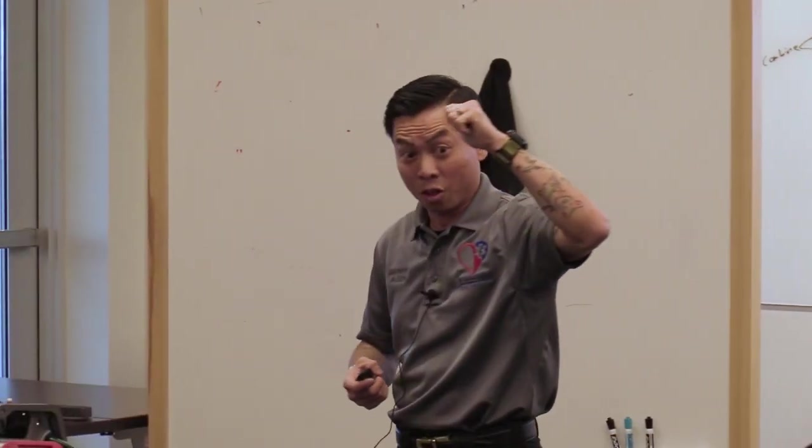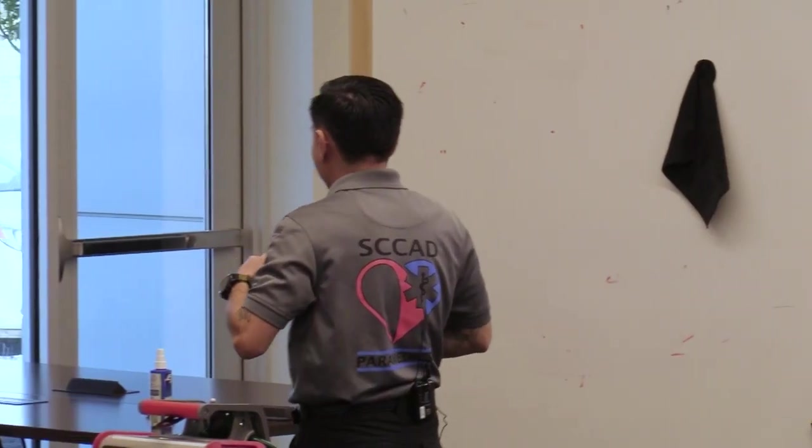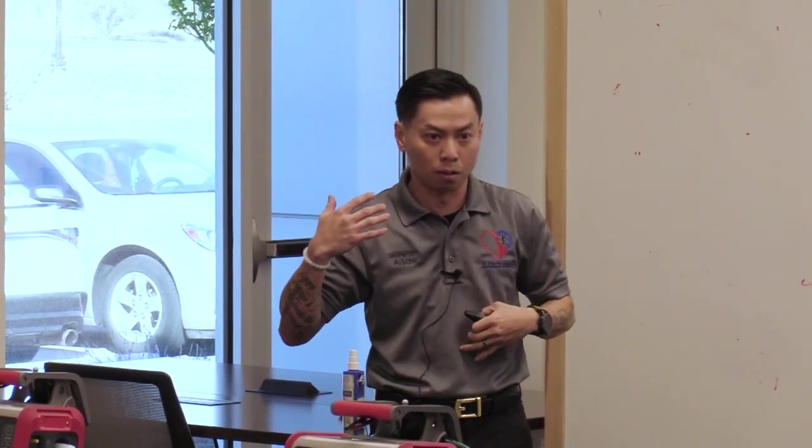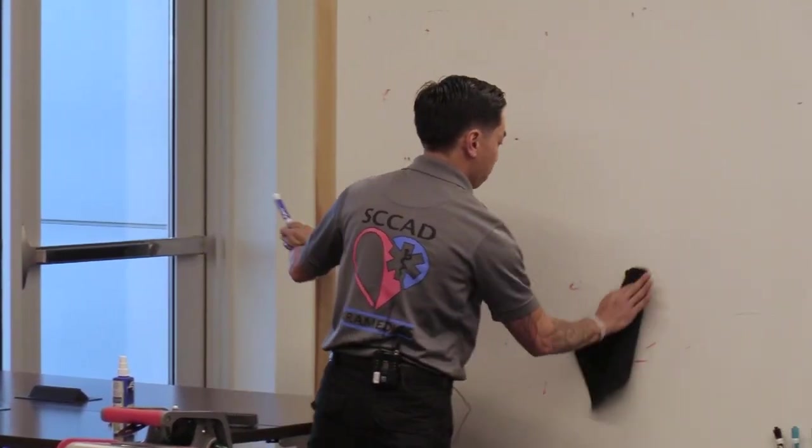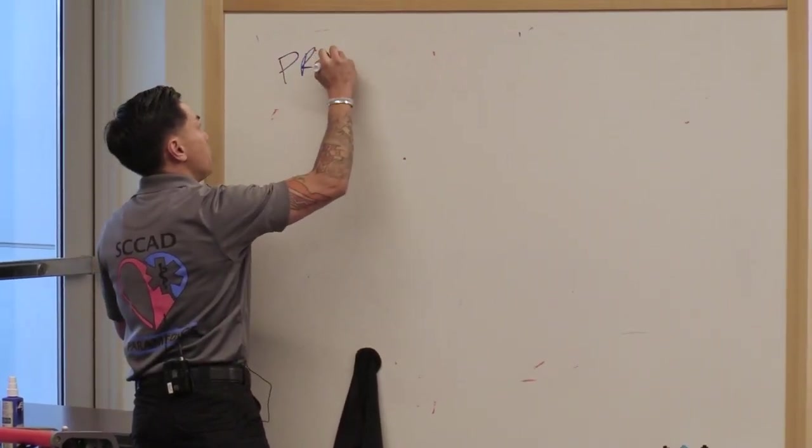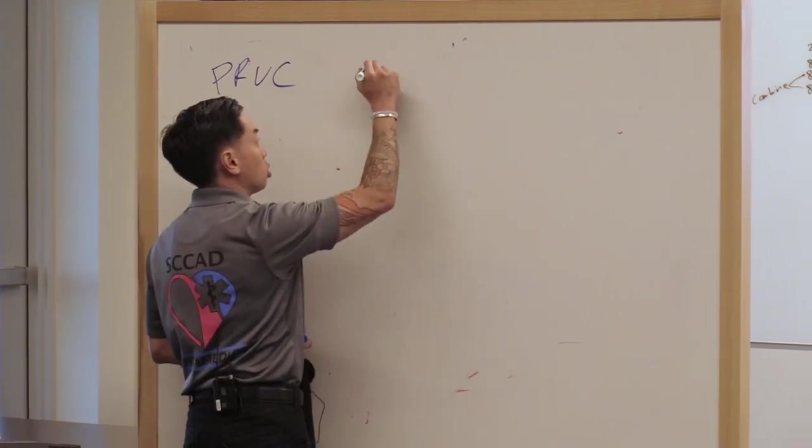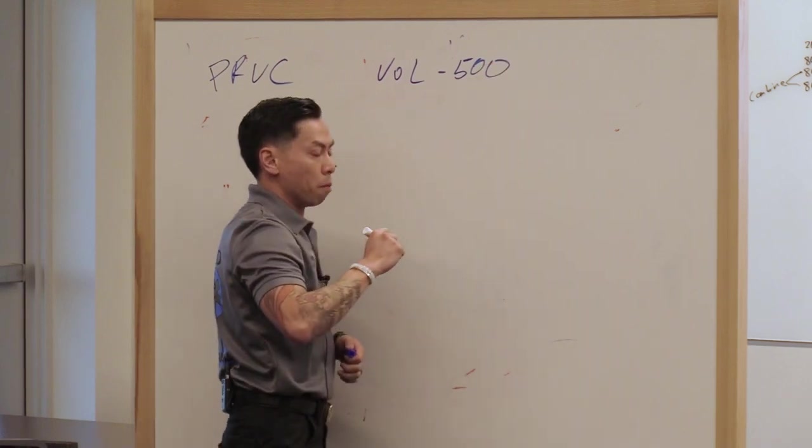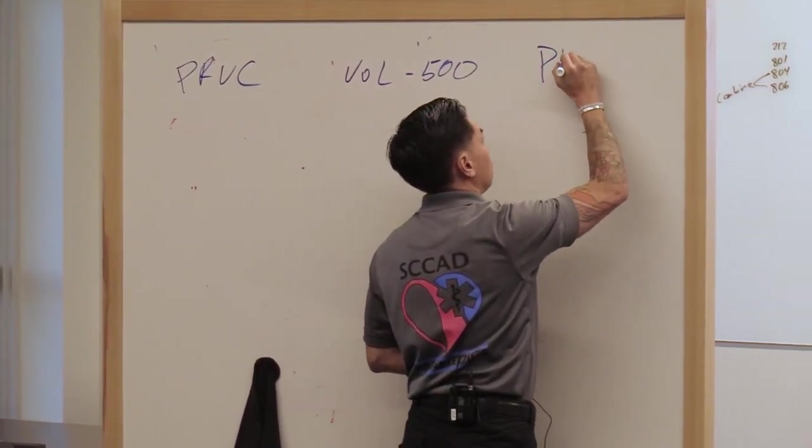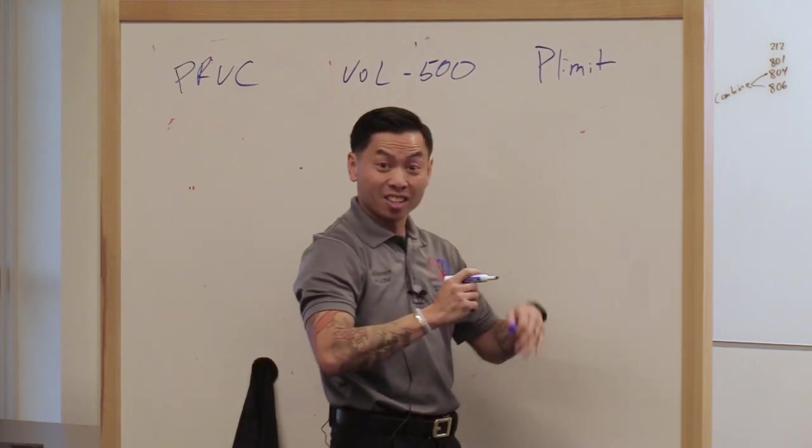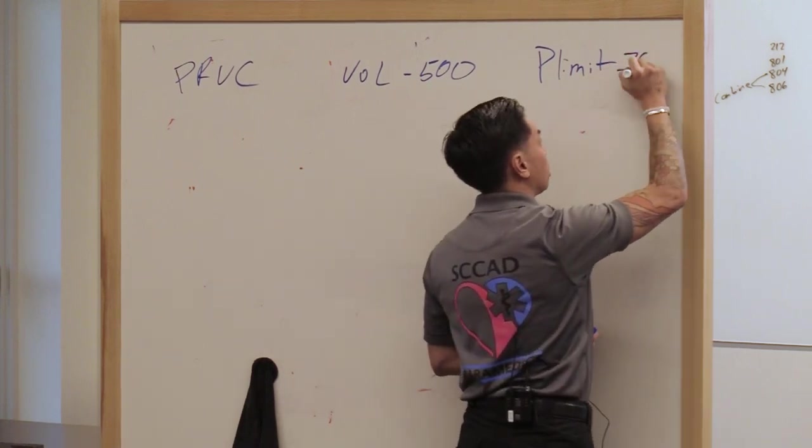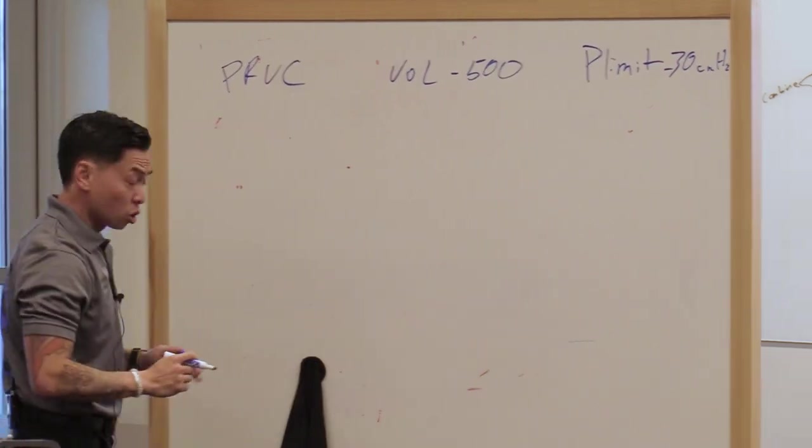So enter PRVC, which is the hot sugar daddy. It was the best of both worlds. And traditionally we would see this in the ICU because it was a lung protective strategy. You wouldn't really see this in pre-hospital. You wouldn't really even see this in the ER. But PRVC, pressure regulated volume control. So why it's the hot sugar daddy is, in PRVC, we set the volume because we taped it out. We know. So we set the volume to 500. But then we set a P limit. And that's the top end. And so we'll say this P limit is 30 centimeters of water.